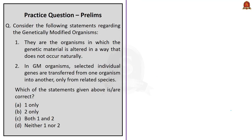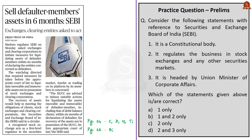Consider the following statements regarding genetically modified organisms. Statement one: they are organisms in which the genetic material is altered in a way that does not occur naturally — this is correct. Statement two: in GM organisms, selected individual genes are transferred from one organism into another only for related species — this is incorrect, because genes from non-related species are also introduced, as in BT cotton where a gene from bacteria is transferred into a cotton plant. Only statement one is correct, so the correct answer is option A, one only.